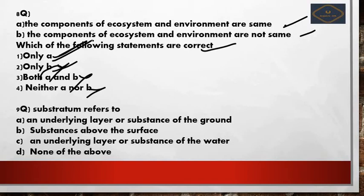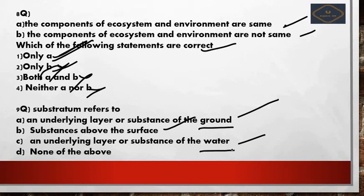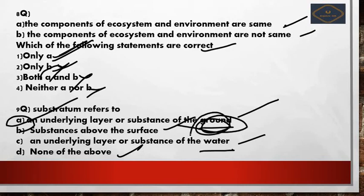Question 9: Substratum refers to — Option A: an underlying layer or substances of the ground. Option B: substances above the surface. Option C: an underlying layer or substances of the water. Option D: none of the above. In UPSC prelims, such questions are frequently asked. Option A is the right answer — substratum is an underlying layer or substance of the ground, not of water.